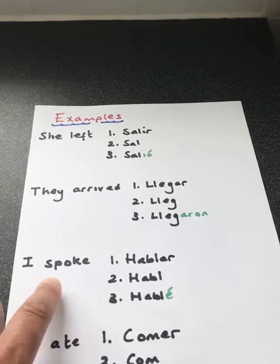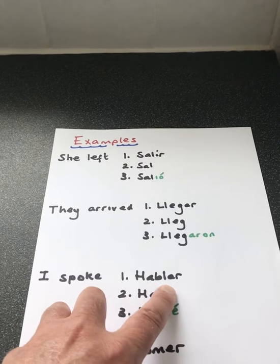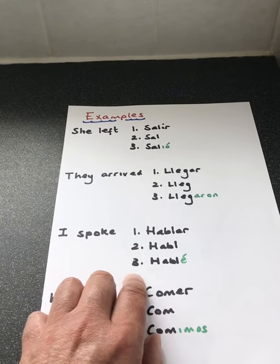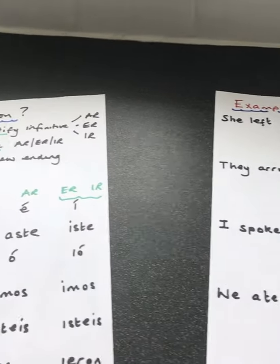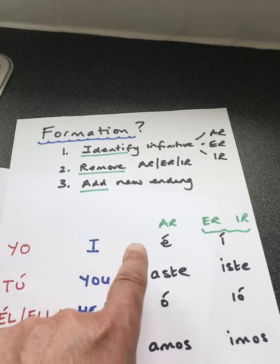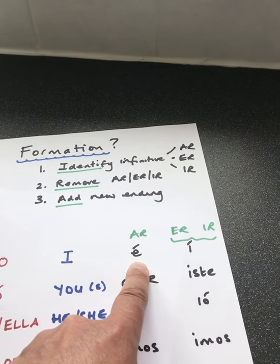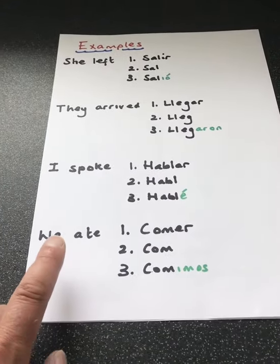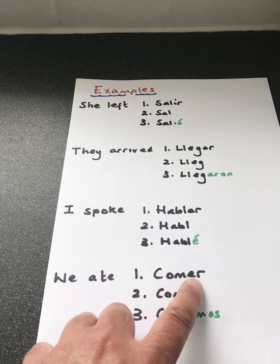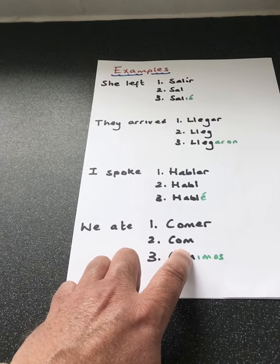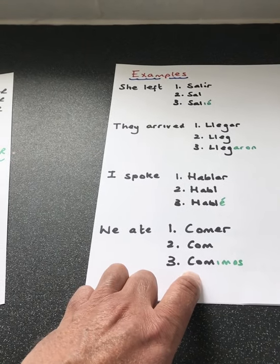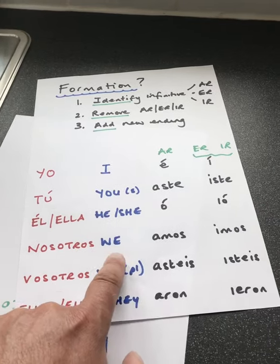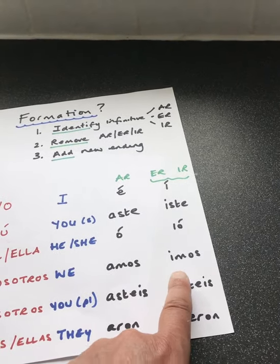Example number three: I spoke. Stage one — hablar, again an AR verb. Stage two, I have removed the AR. Stage three, I've added the new ending. It's AR — there is my ending. Example number four: we ate. It's an ER verb. Remove the ER, I'm left with 'com'. Stage three, to add my new ending. It was in the ER/IR section — comimos.